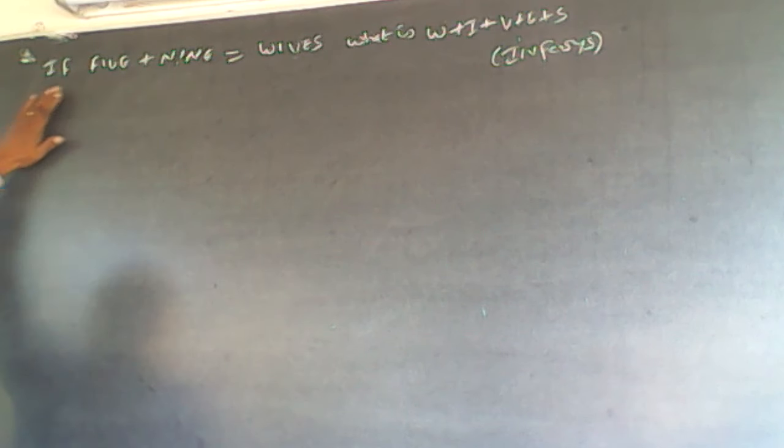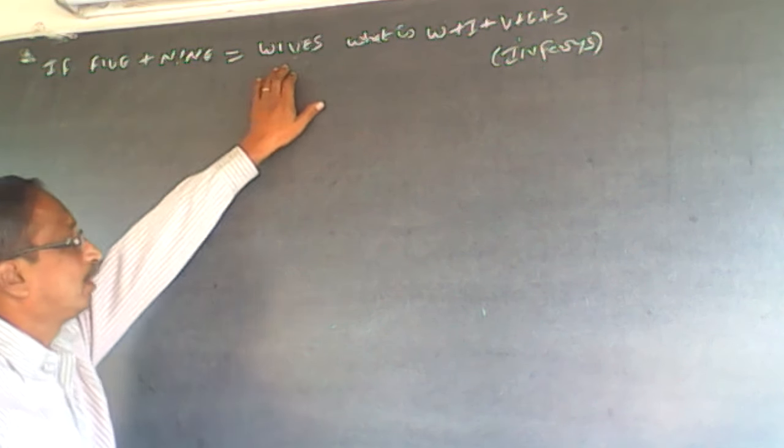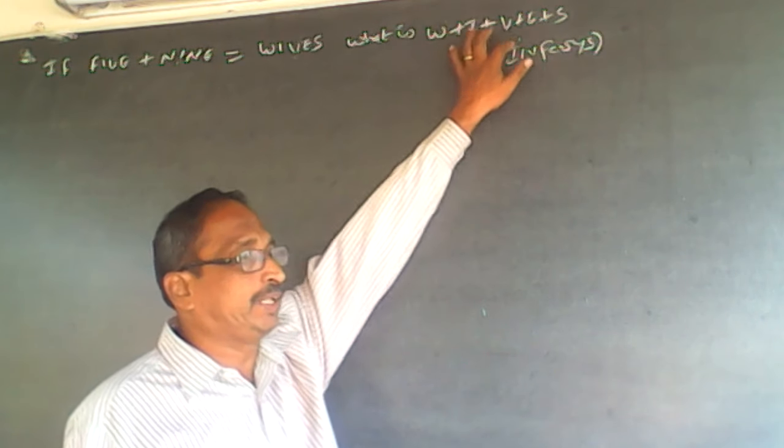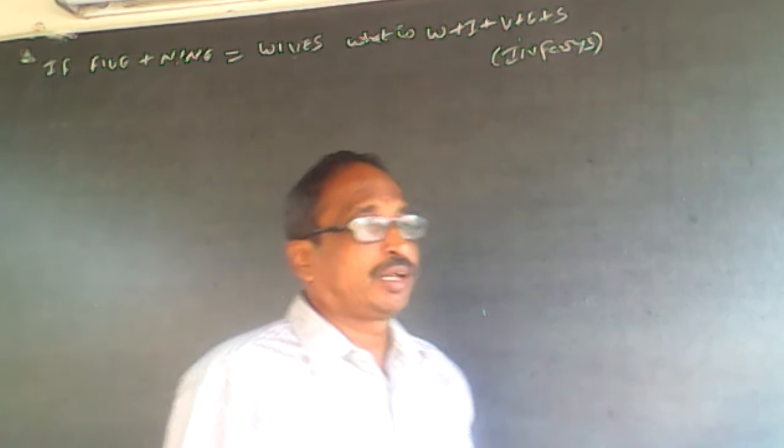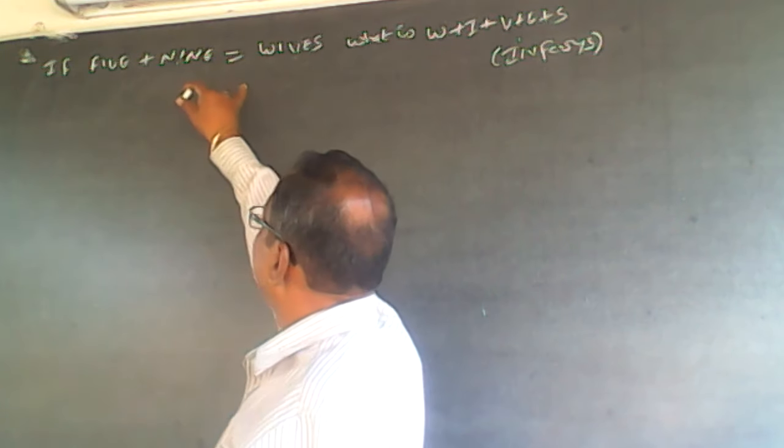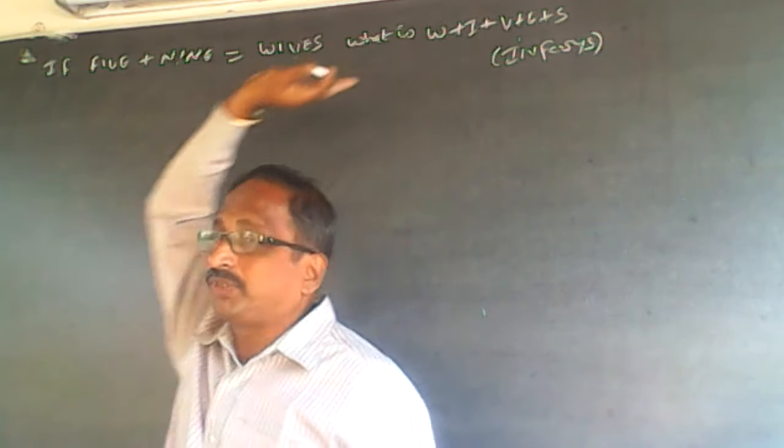The question is, if FIVE + NINE is equal to WIVES, what is W + I + V + E + S?